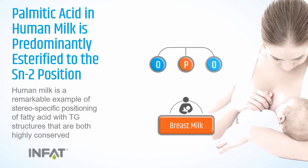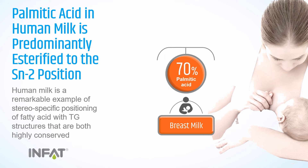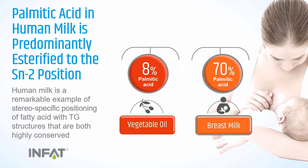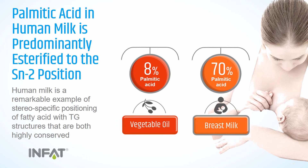In breast milk, the triglycerides have a very special structure where 70% of palmitic acid is located on the middle position of the triglyceride, while in vegetable oil it will be predominantly bound to position SN1 or SN3, with only 8% in the middle position.